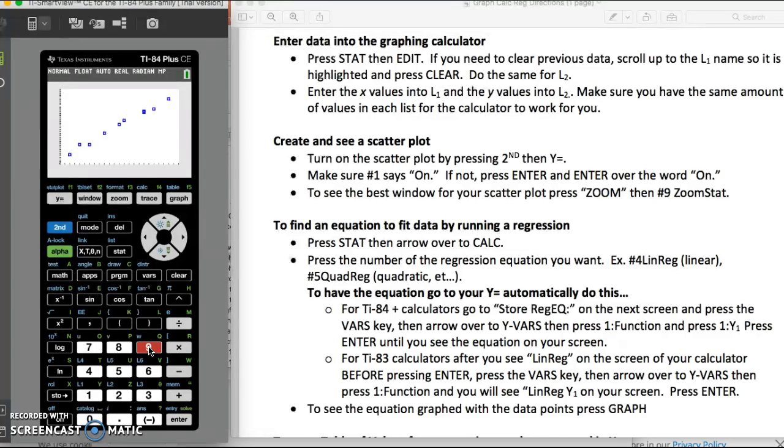Now you can see that this definitely is a set of linear data, that these points are lining up, and so there is a constant rate of change between our input and our output. So we want our calculator to give us the best linear equation that it can. Now we're going to go to our next set of directions. We're going to find an equation to fit this data by having the calculator run a regression.